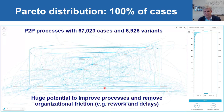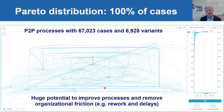What we've also seen, and what I've stressed throughout the lectures, is that many processes follow a so-called Pareto distribution, at least if you look at them in the right way. Here you see a purchase-to-pay process with over 67,000 cases generating almost 7,000 variants — 7,000 unique ways of executing the process, ignoring time, data, and resources, just looking at the ordering of activities. This spaghetti model shows a huge potential for improvement, because not all 7,000 variants are desirable. The idea is to find the variants you would like to avoid and reroute them to variants that, based on the evidence, lead to good outcomes.